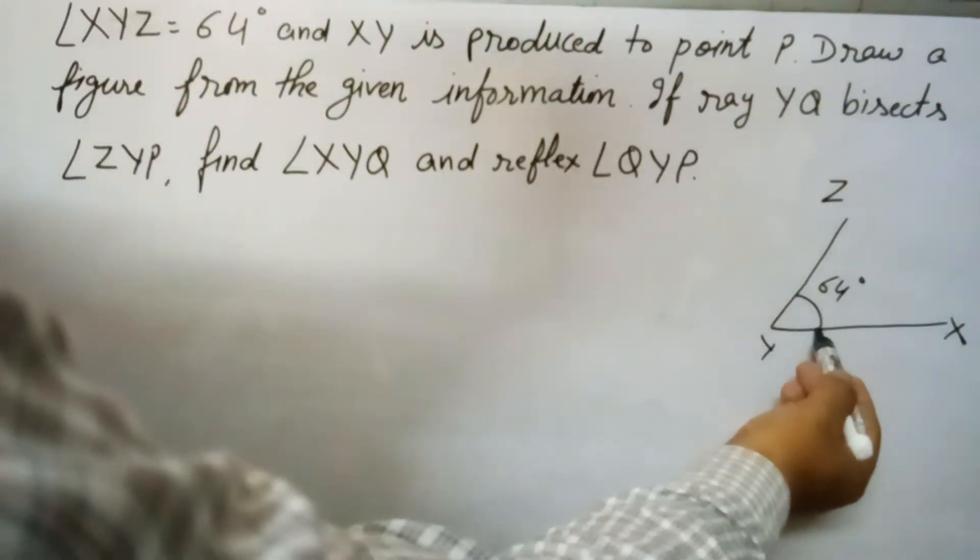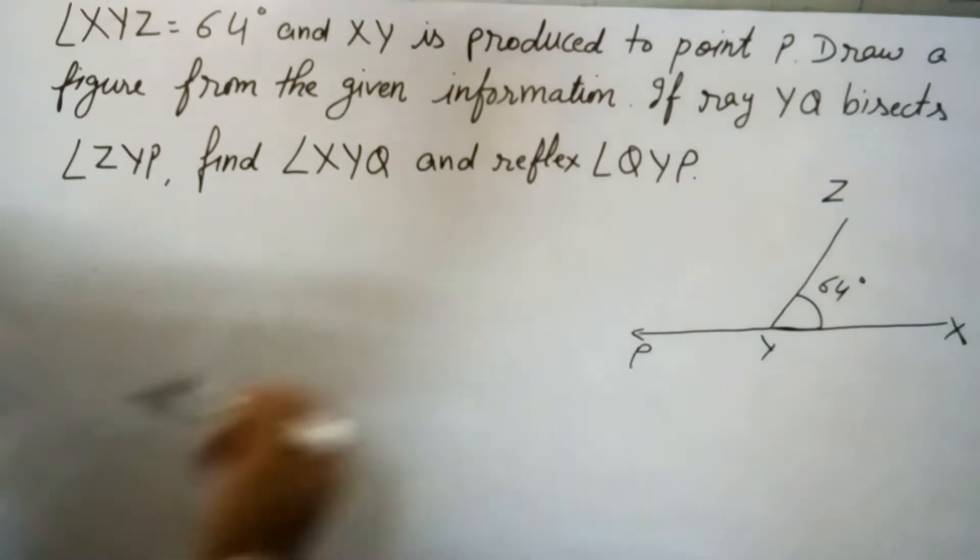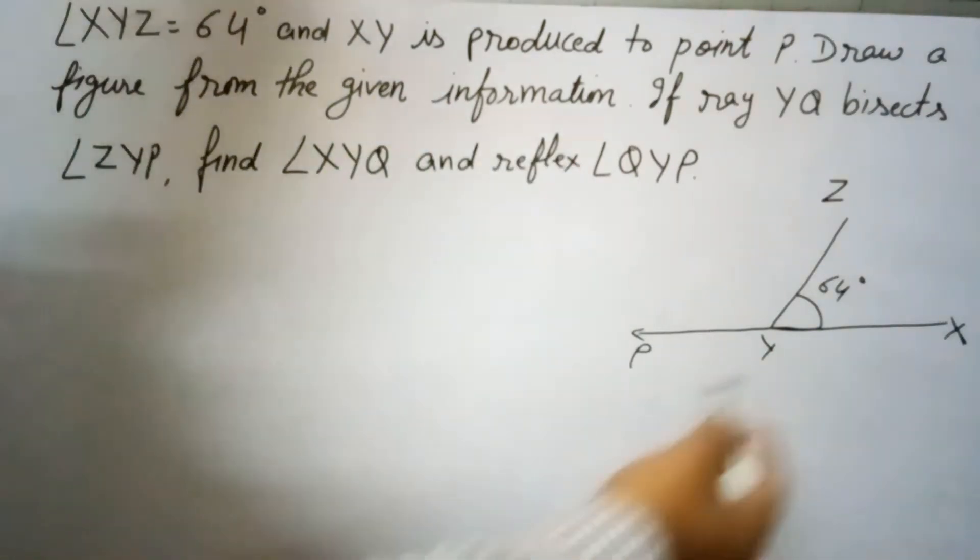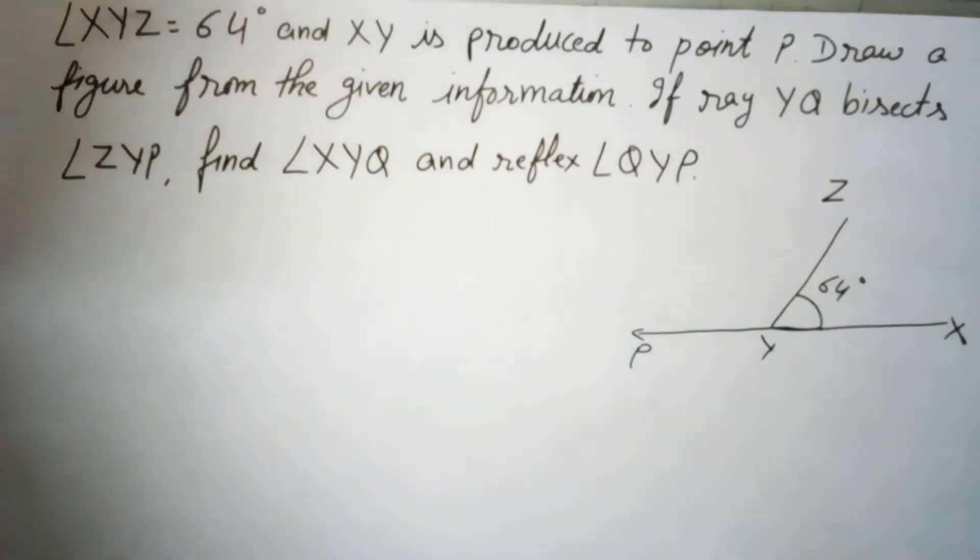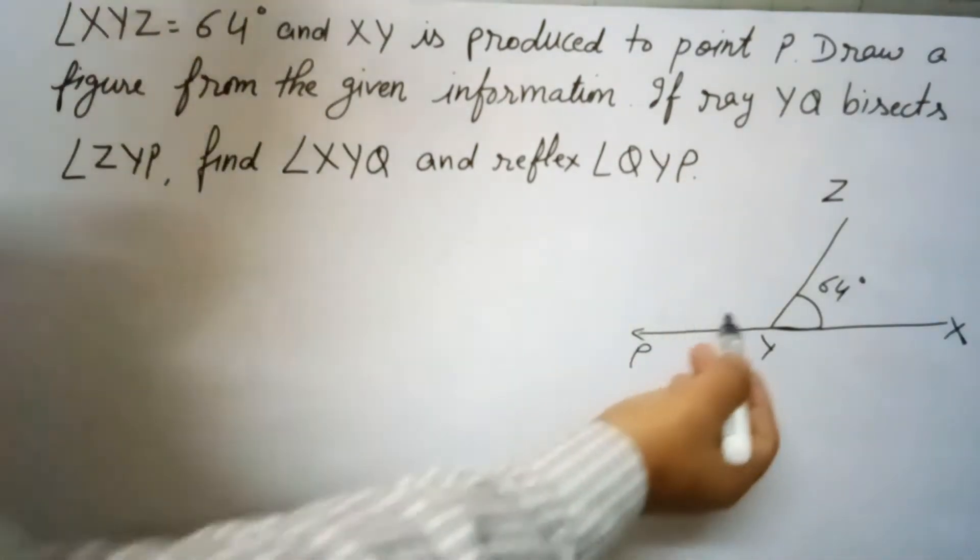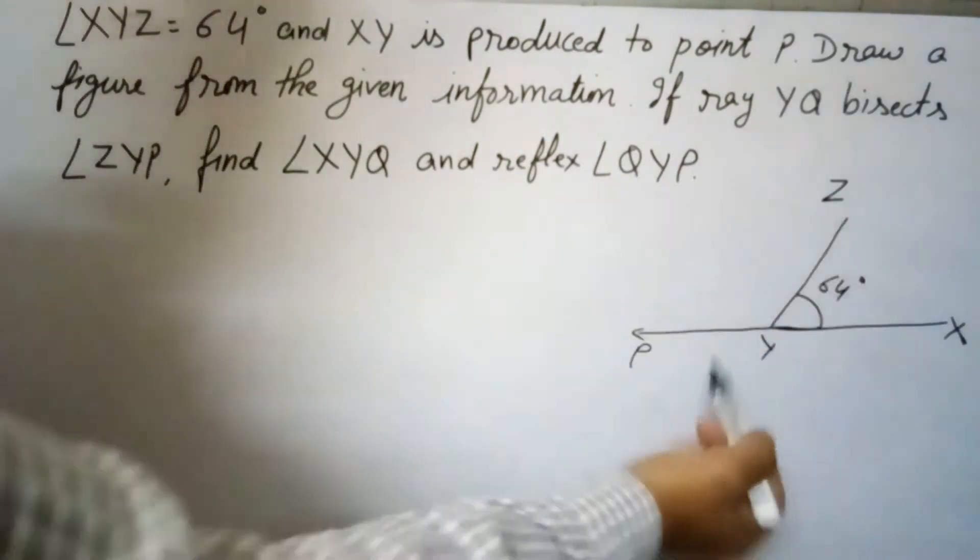Draw the figure from the given information. So this is the figure from this information. Now if ray YQ from here, ray from point Y, bisects angle ZYP.